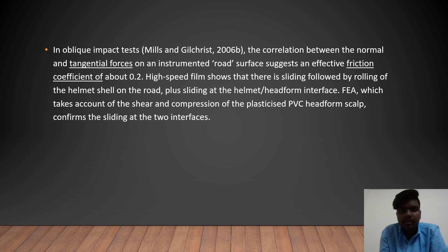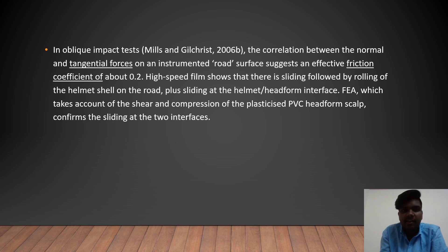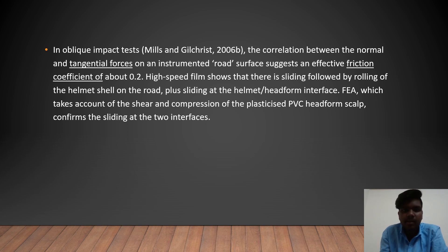In oblique impact tests, the correlation between the normal and tangential forces on an instrumented road surface suggests an effective friction coefficient of about 0.2. High-speed film shows that there is sliding followed by rolling of the helmet shell on the road, plus sliding at the helmet-head form interface. FEA, which takes account of the shear and compression of the plasticized PVC head form scalp, confirms the sliding at the two interfaces.